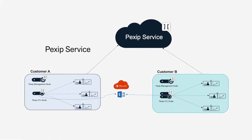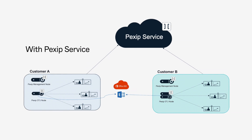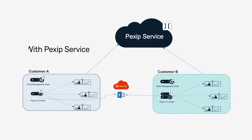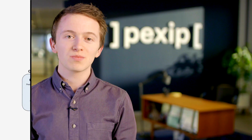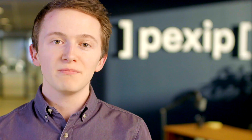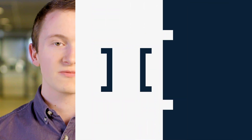Pexip's service customers will need to deploy a management node and at least one conferencing node. This can be deployed on-premise or with a cloud provider of your choice. A self-hosted deployment allows the Pexip software to communicate with endpoints on the customer's local network and maintains data privacy. Meeting information remains in the customer's network.